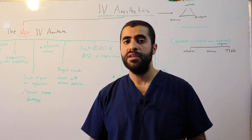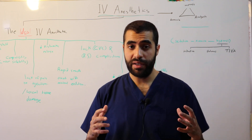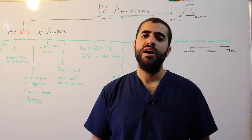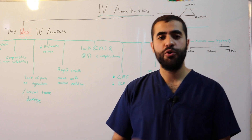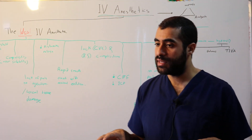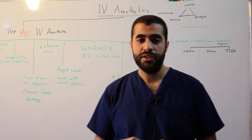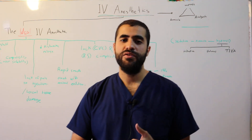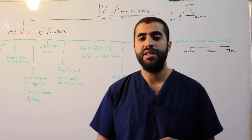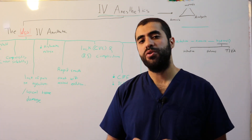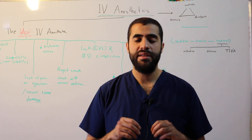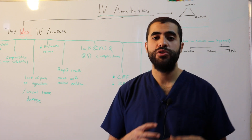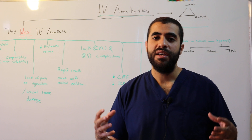To talk about IV anesthetics we have to refer to what we call the triad of anesthesia. The triad of anesthesia are the three main components that you have to accomplish to say that this patient is now in general anesthesia status. The first component is to get your patient to sleep so he will not be aware of the procedure — this component is hypnosis.